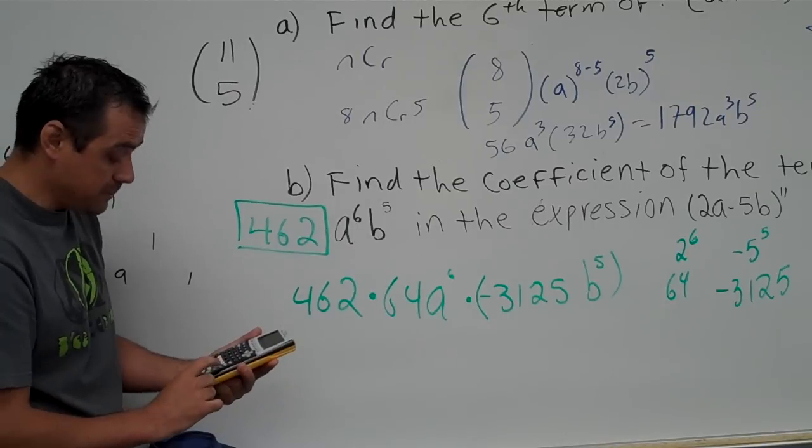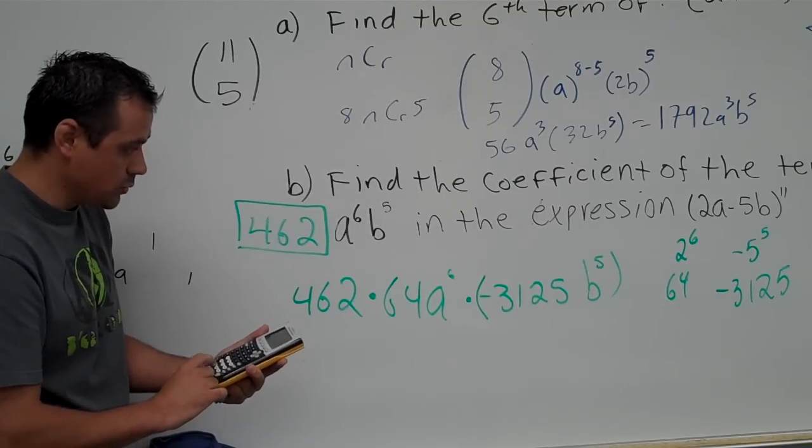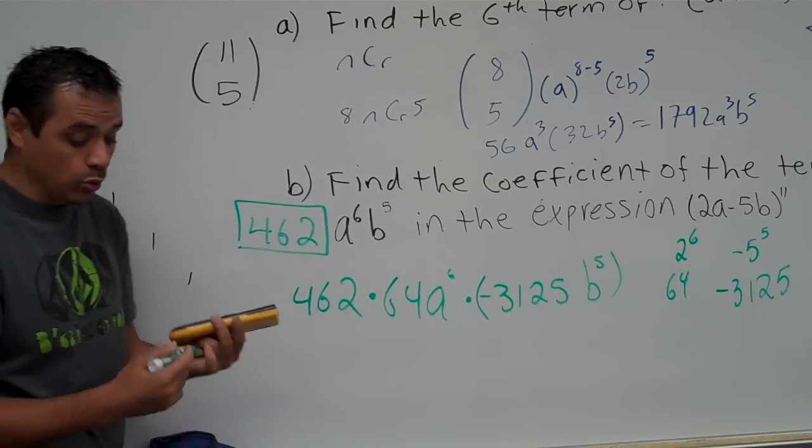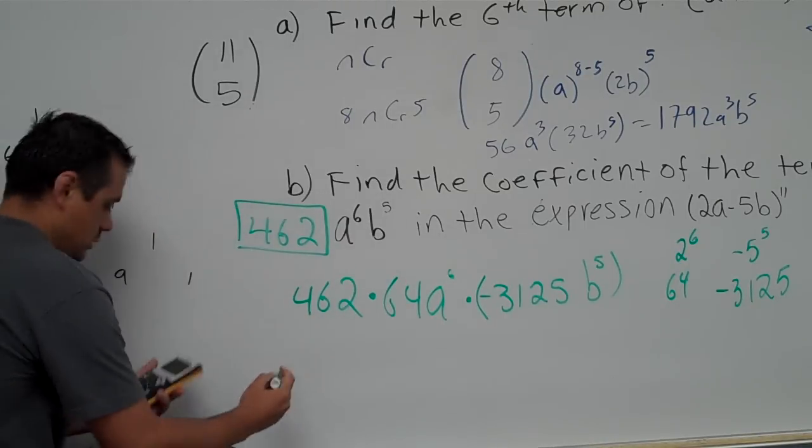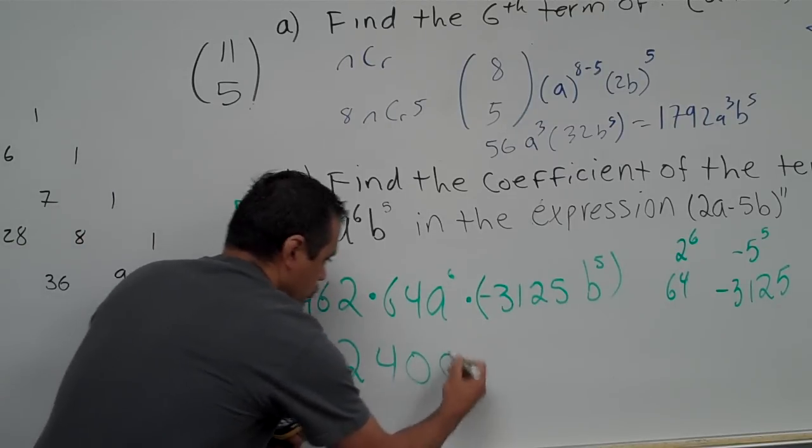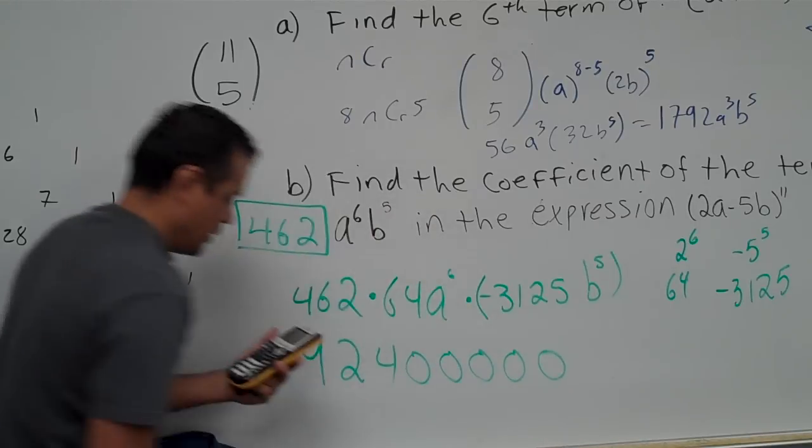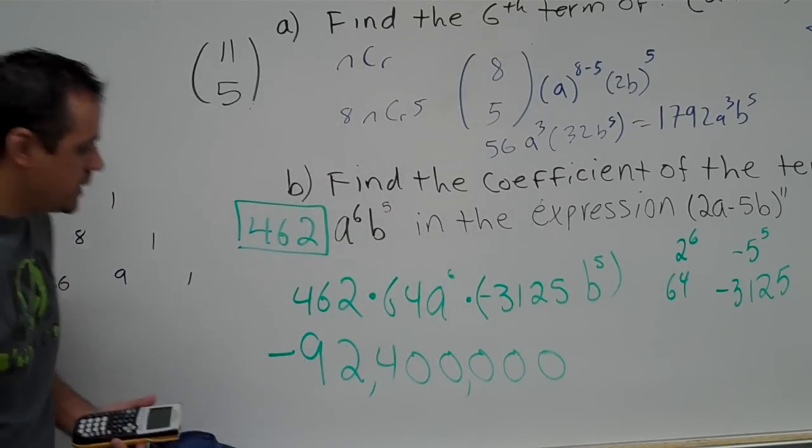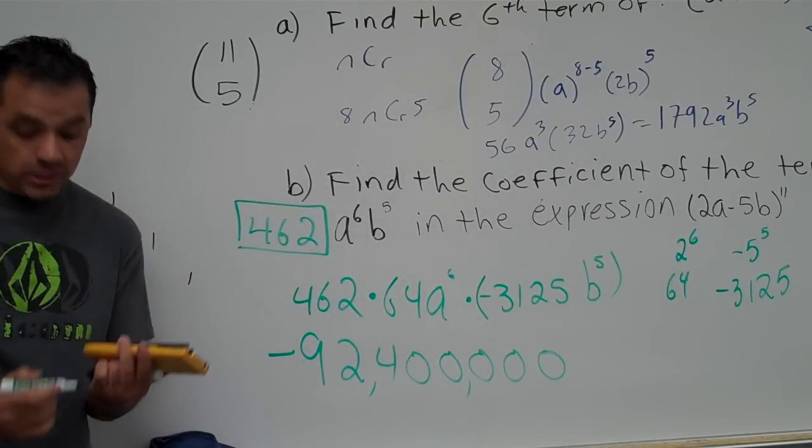462 times 64 times a negative 3,125. And that gives us, ooh, a lot. This is going to be negative. 9, 2, 4, 1, 2, 3, 4, 5. Yep, so that gives us negative 92,400,000. That is the coefficient.